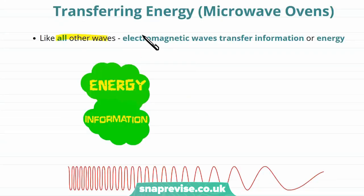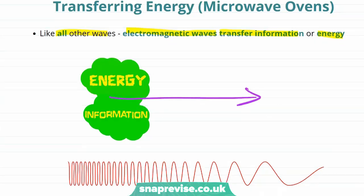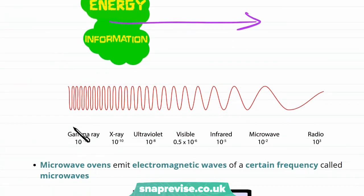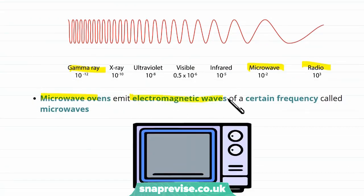Like all other waves, electromagnetic waves transfer information or energy — as a wave travels along, it carries energy and information. This is true for all different frequencies of the spectrum. Let's start by talking about microwaves. Microwave ovens emit electromagnetic waves of a certain frequency, unsurprisingly called microwaves.